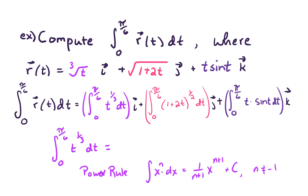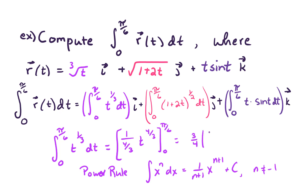Applying the power rule: we're looking at 1 over 1 plus 1 third, so that's 1 over 4 thirds, times t to the 4 thirds power, evaluated from 0 to pi over 6. In other words, that's 3 fourths times pi over 6 to the 4 thirds, minus 0. So that gives us 3 fourths times pi over 6 to the 4 thirds power for the i component.